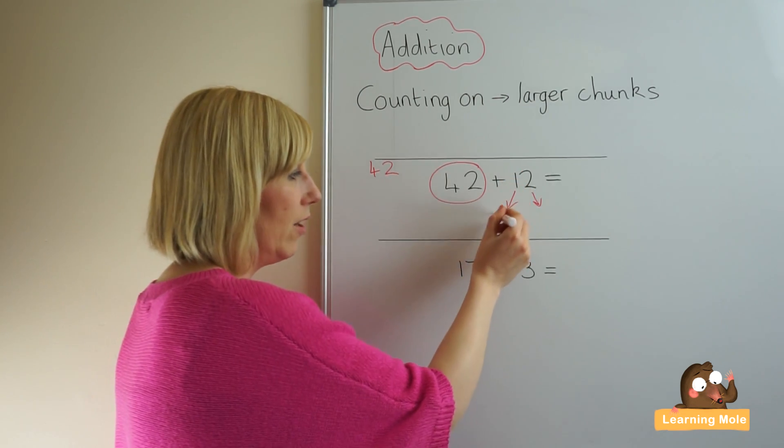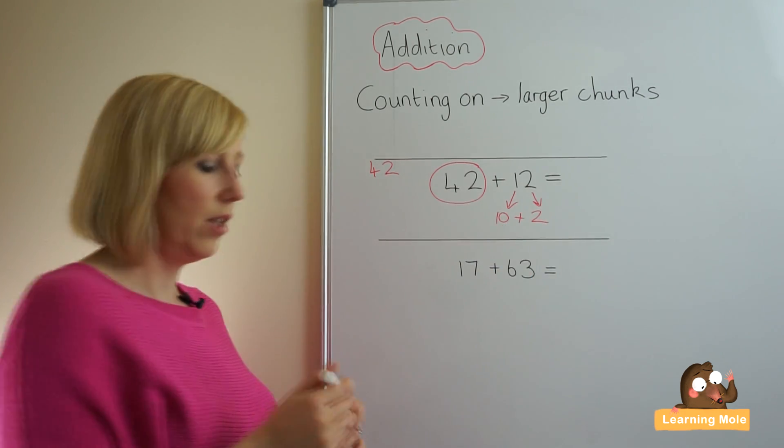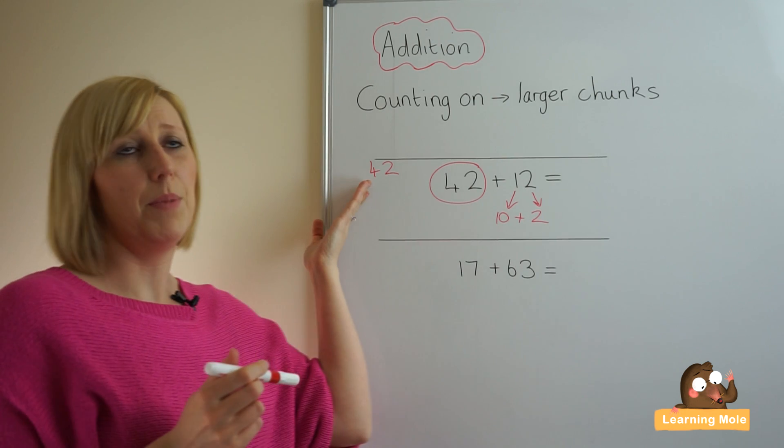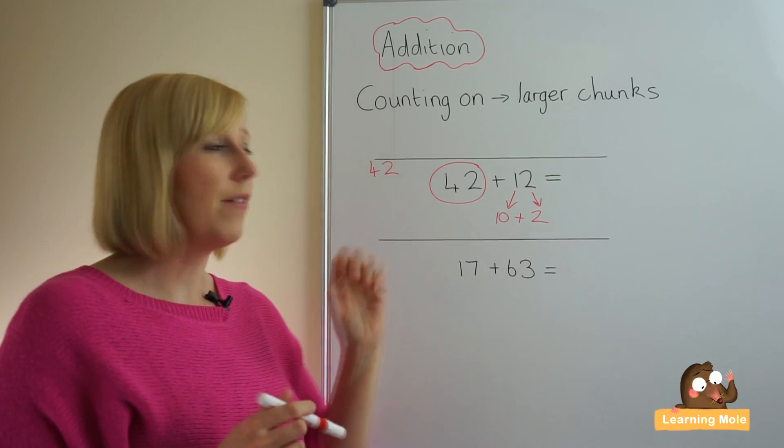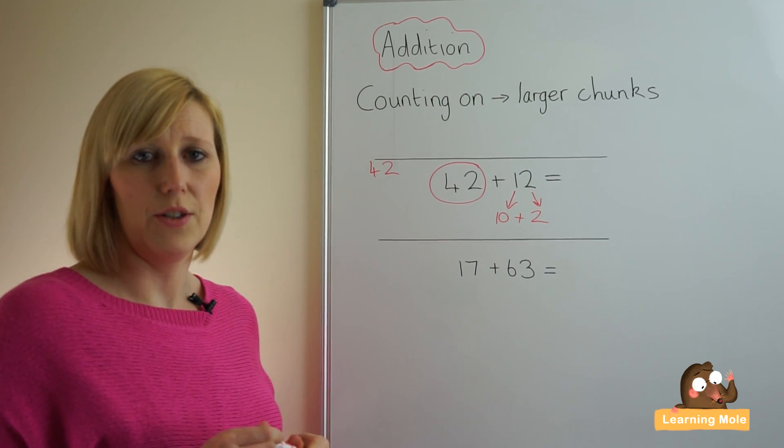Well, we've got one ten here which is ten, plus our two units. So we have reordered, we've put our biggest number first, we have partitioned, and now we're going to count on with these larger chunks.